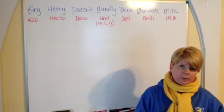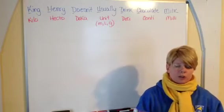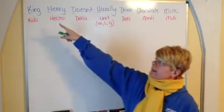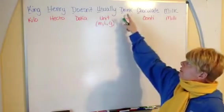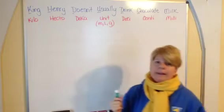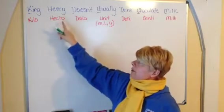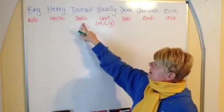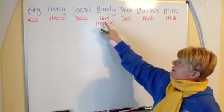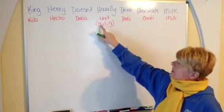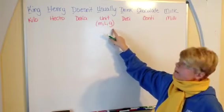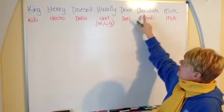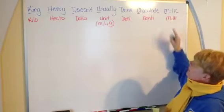Just to review a couple things. The phrase that you should use, that you should have memorized to help you is King Henry doesn't usually drink chocolate milk. King stands for Kilo, Henry is Hecto, doesn't is DECA, usually stands for our basic unit which is either going to be meters, liters, or grams. Drink is DESI, chocolate is Centi, and milk is Milli.